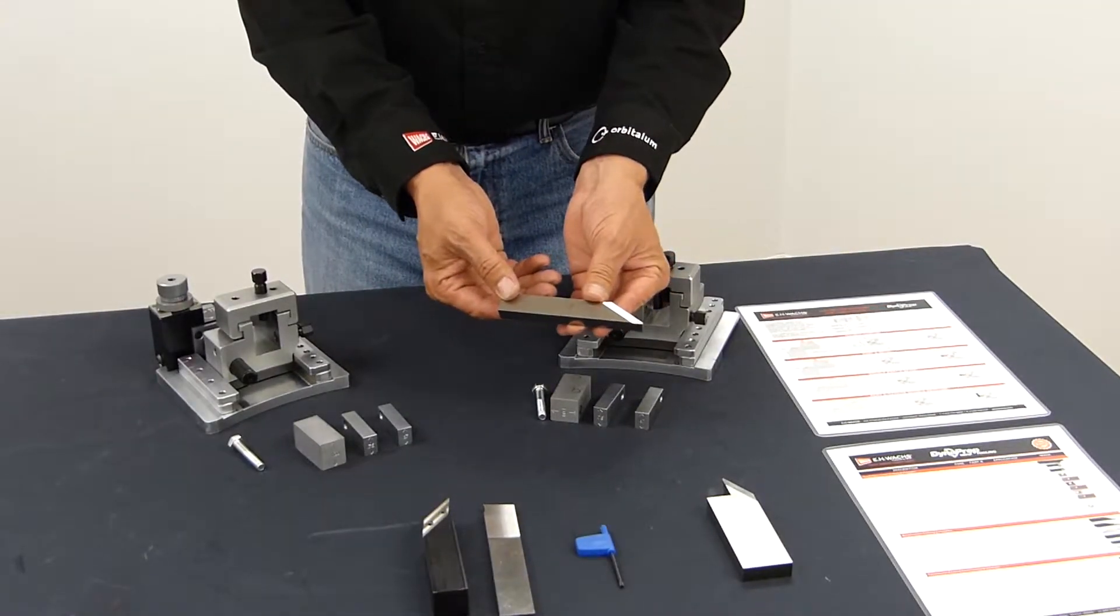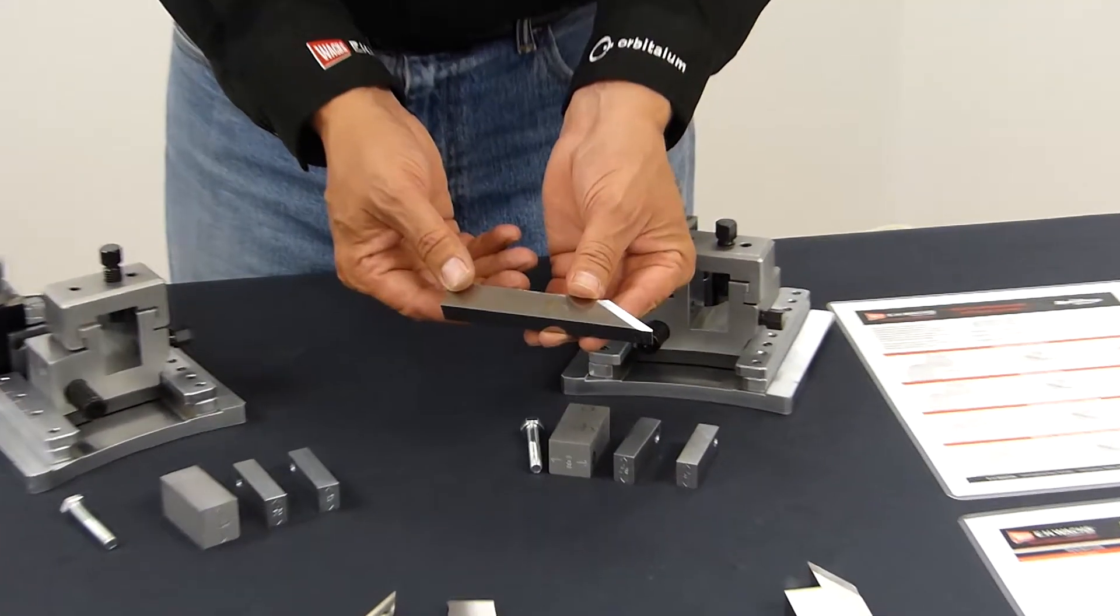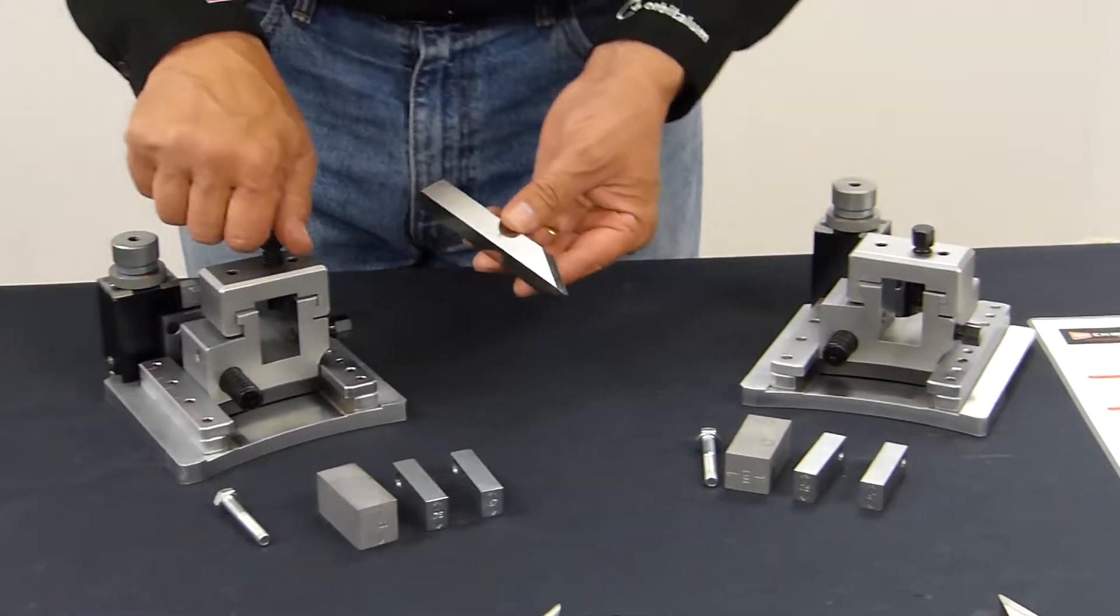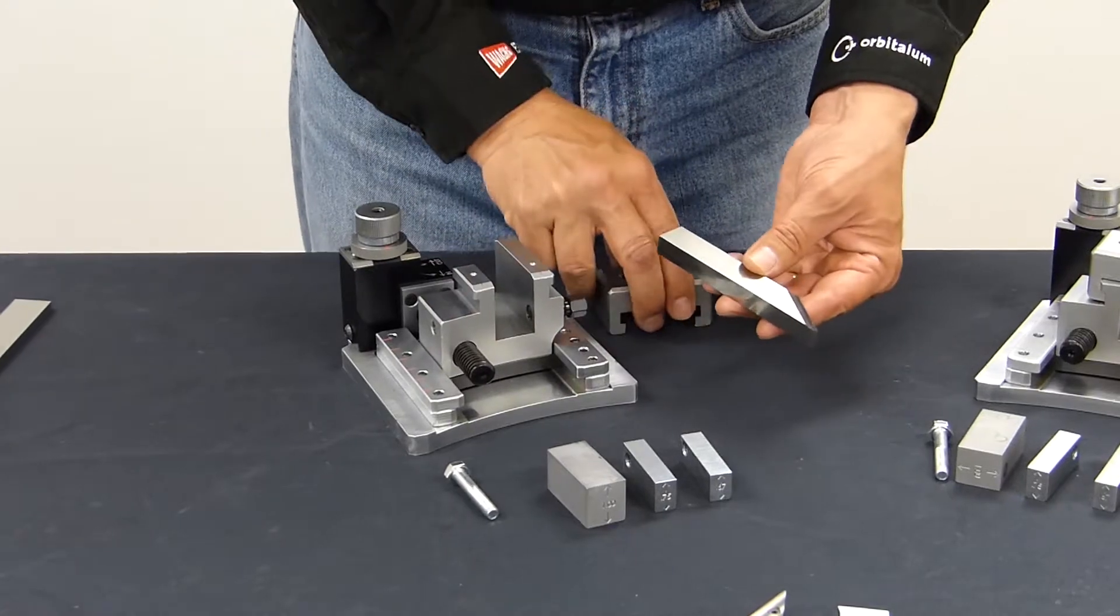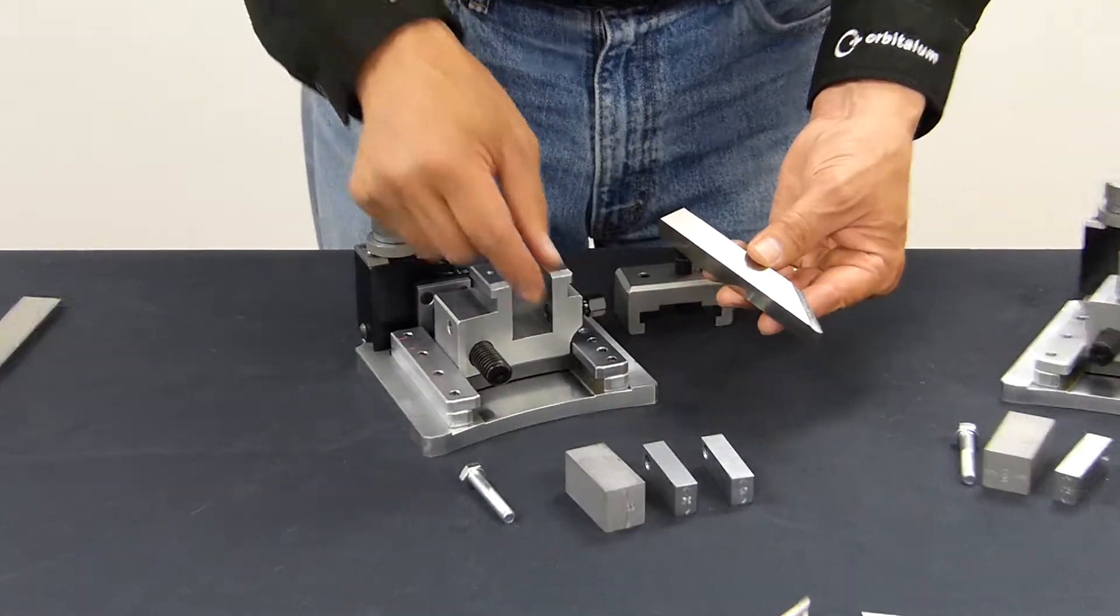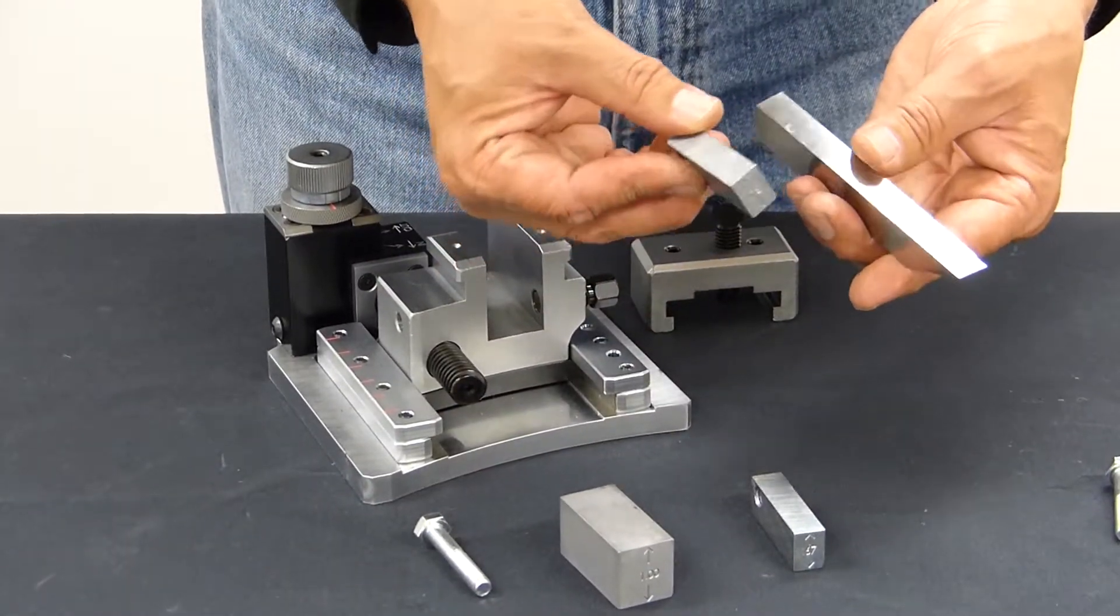Now we're going to set up a double part and bevel using the legacy tooling. I'm going to use my 37.5 degree high speed tool bit. We'll be placing that into this slide. First thing we need to do is add a three quarter inch spacer.